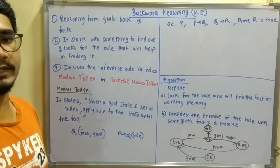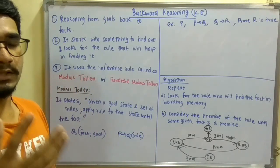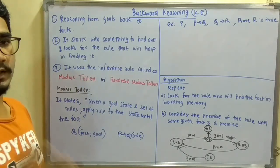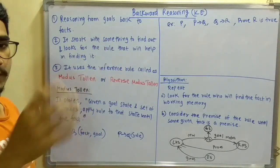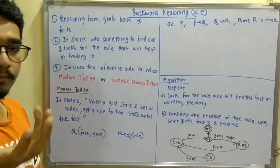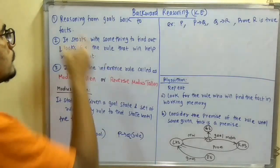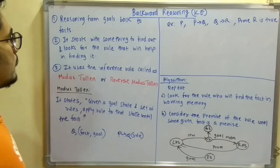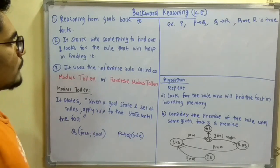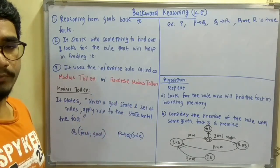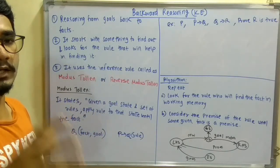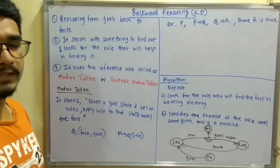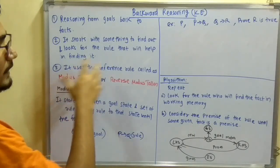Backward reasoning is basically reasoning from goals back to facts. In forward chaining you have a set of facts and a set of rules, and from those you reach the goal. In backward chaining you have a particular goal, and from that goal along with a set of rules, you derive new facts in the working memory. It starts with something to find out and looks for rules that will help find it.